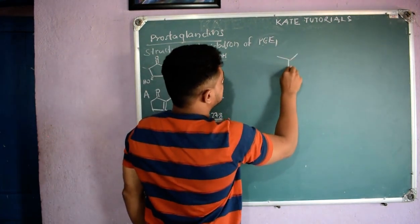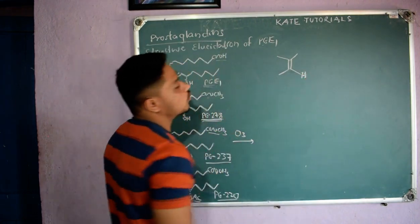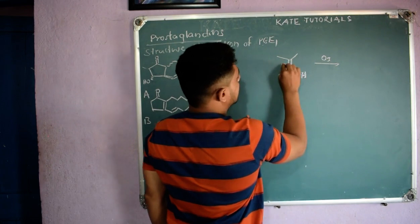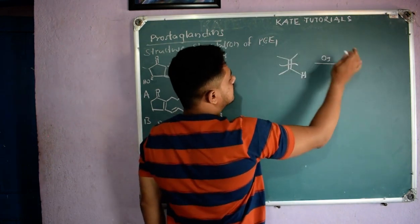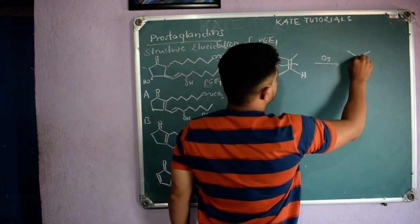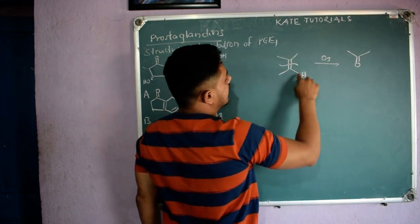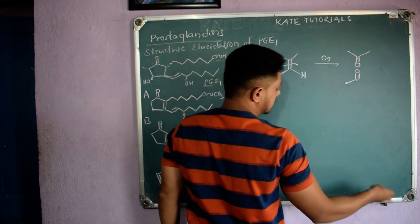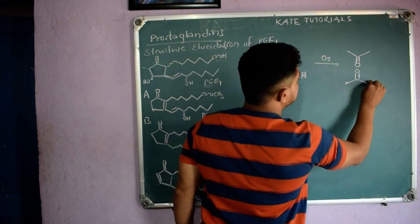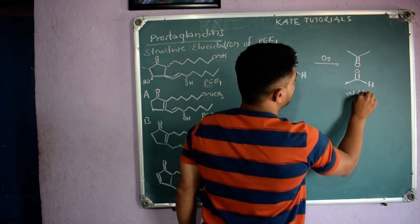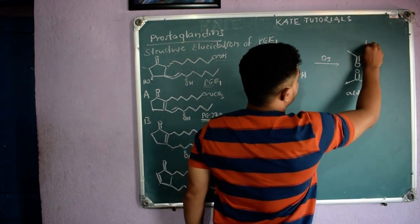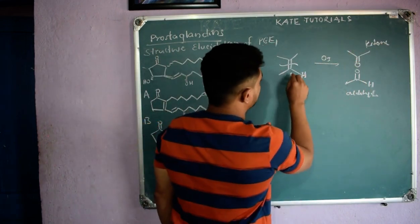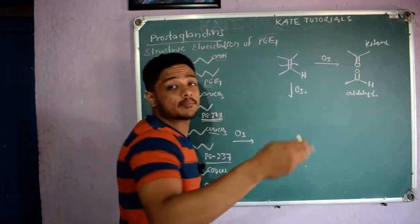In simple ozonolysis with O₃, when R groups are on both sides of the pi bond you get a ketone, and where H is present on one side you get an aldehyde. So we get aldehyde on one side and ketone on the other side.